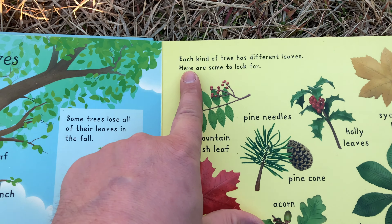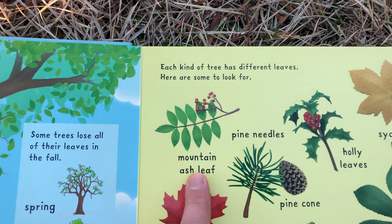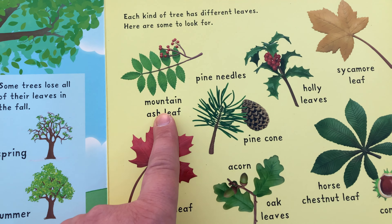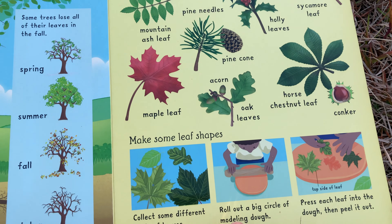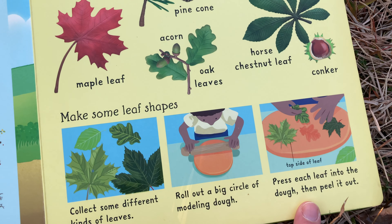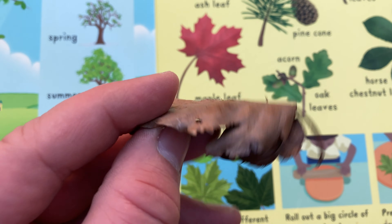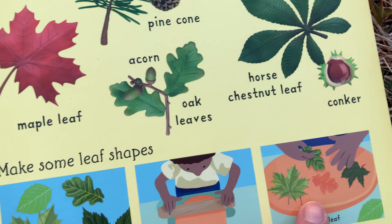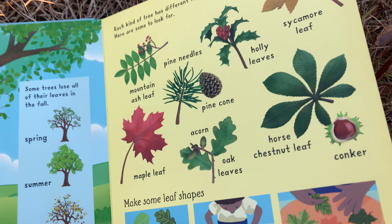Each kind of tree has different leaves — here are some to look for. You can collect different kinds of leaves, roll out a big circle of modeling dough, and press each leaf into the dough and peel it. And then you can make a print of the leaf, just like this. Isn't that cool? I've never known that before, have you?